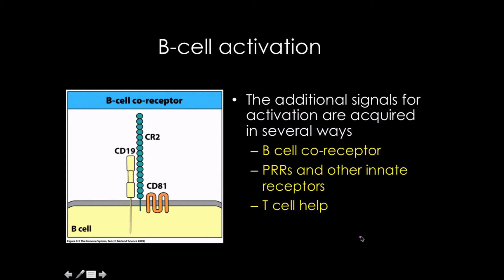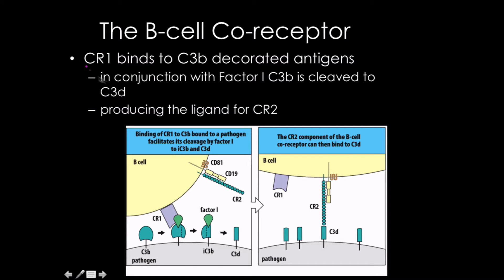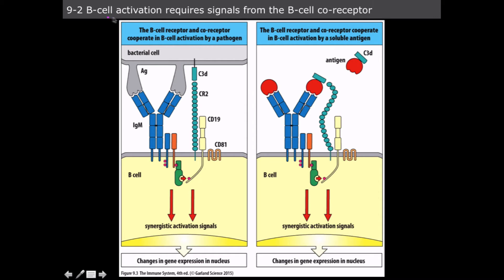Most importantly and predominantly, T-cell help plays a huge role in B-cell activation. Complement receptor 1, also on the B-cell, plays a role in cleaving complement fragments into C3d, which is the ligand for complement receptor 2. This allows signals from the B-cell co-receptor to be oriented into close proximity of the B-cell itself, because the signal chain on CD19 gets phosphorylated by those tyrosine kinases. This can apply to any type of soluble toxin, venom, or even penicillin flagged with complement.